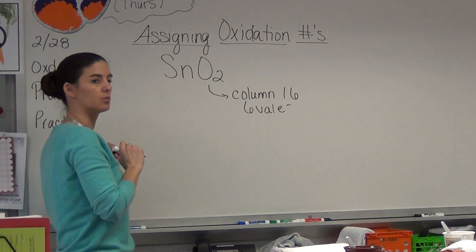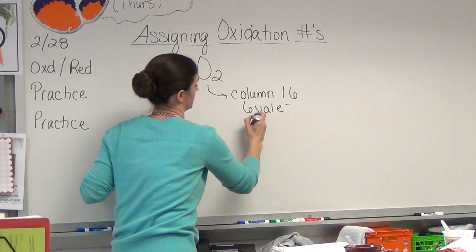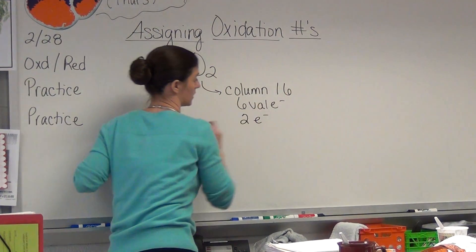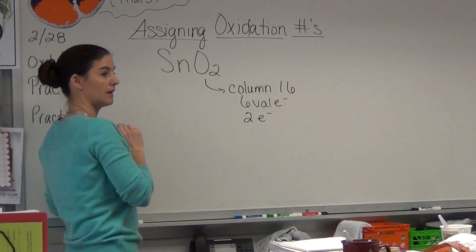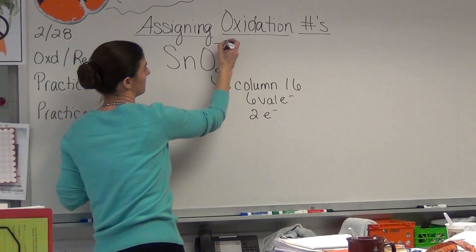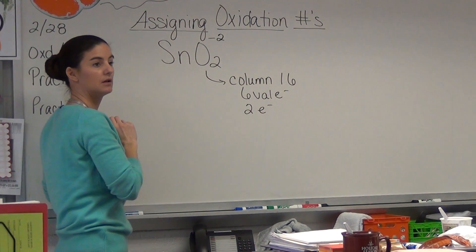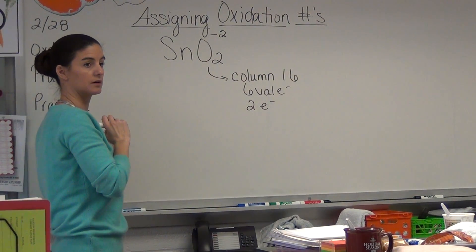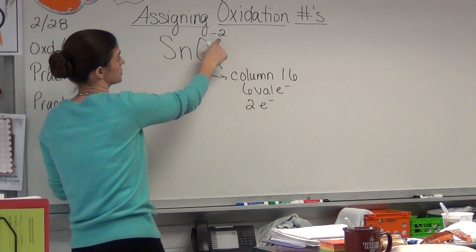How many electrons does it want to gain? Two electrons. So these two electrons make this oxygen a minus two. That's the oxidation number for oxygen, minus two.